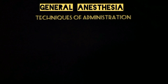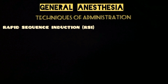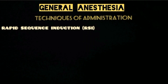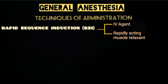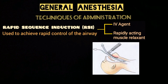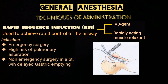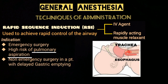There are several techniques of administration of anesthesia. One is rapid sequence induction (RSI), in which a predetermined dose of IV agent together with a rapidly acting muscle relaxant is given to achieve rapid control of the airway. It is most commonly indicated in emergency surgery, when there is a high risk of gastric regurgitation into the lungs (pulmonary aspiration), or in any non-emergency surgery in a patient with delayed gastric emptying.